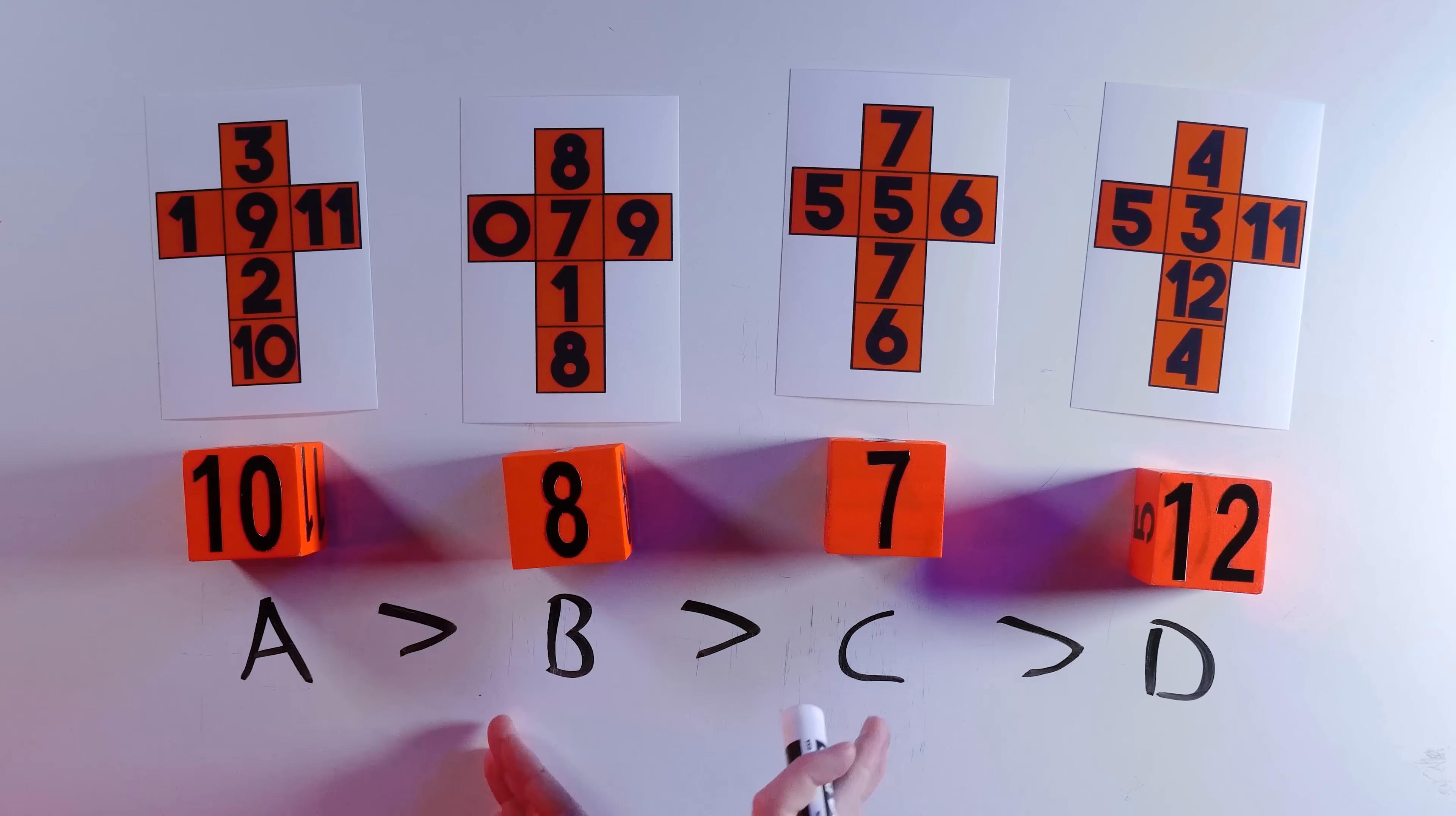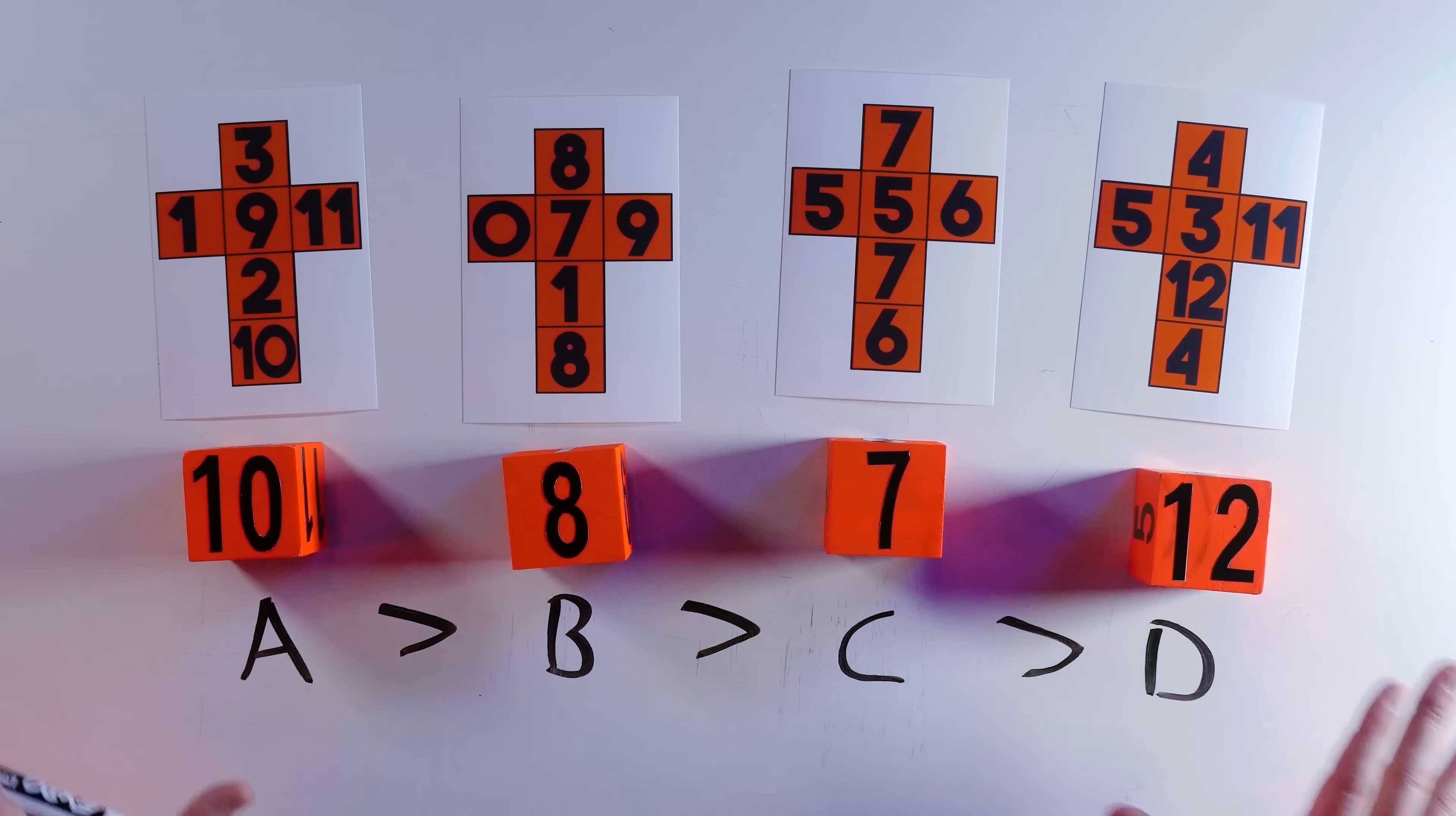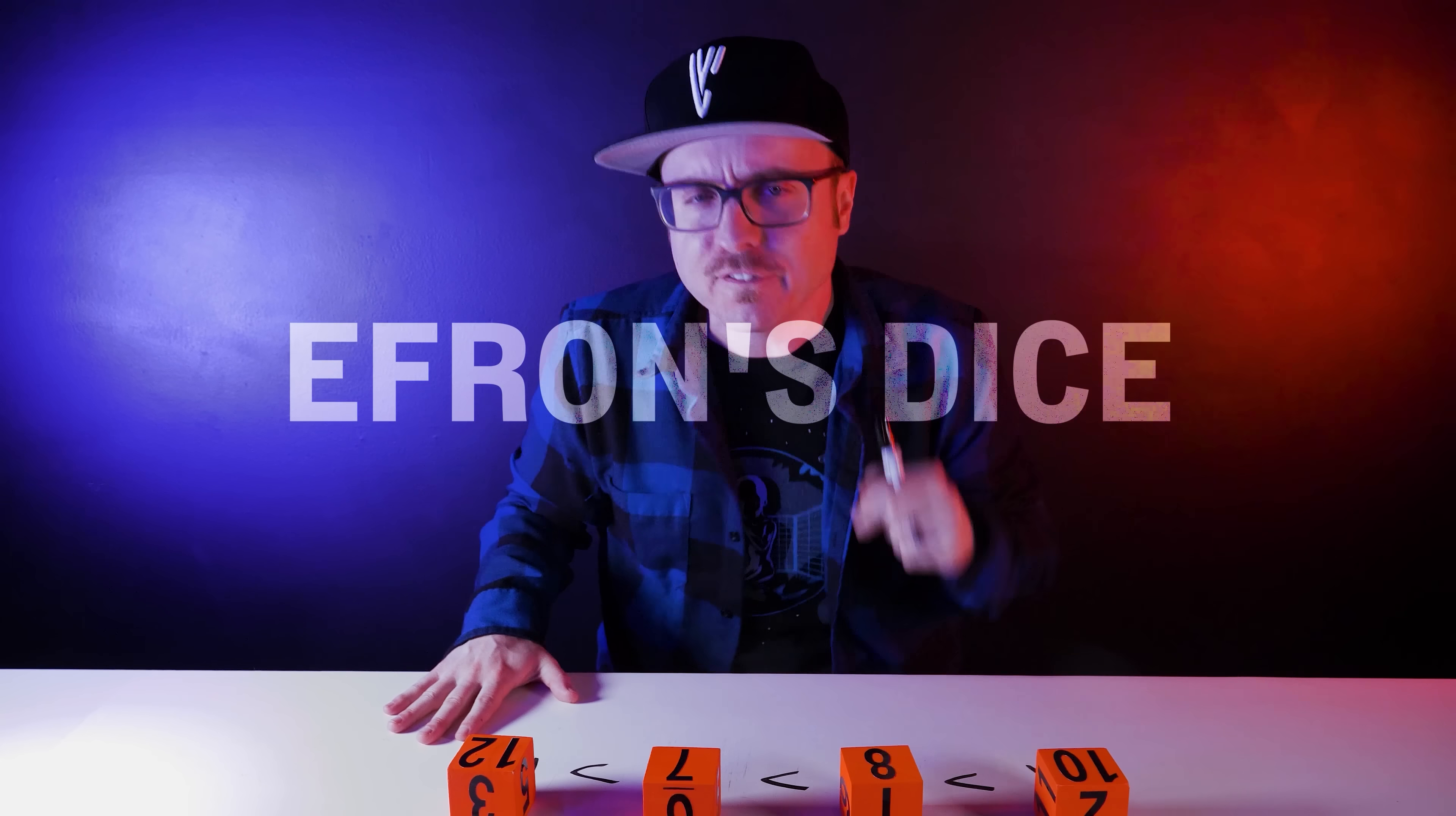In this game, no matter what die you choose, I'm going to beat you twice as often as you beat me, even with the A is greater than B is greater than C is greater than D chain of dominance. But I'm always going to pick a better die, because these dice aren't transitive. These are Efron's dice. Here's the proof. My voice cracked. Who cares? Math!